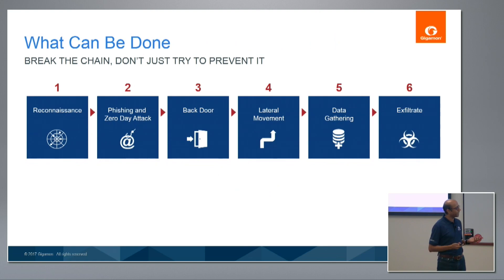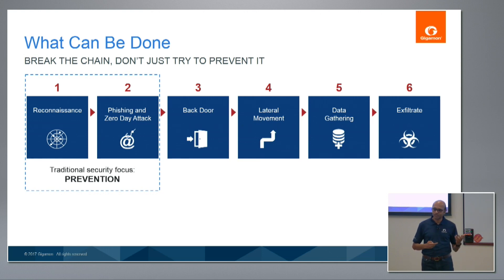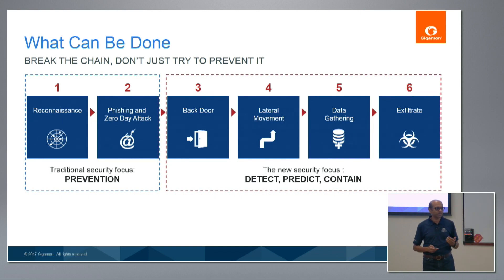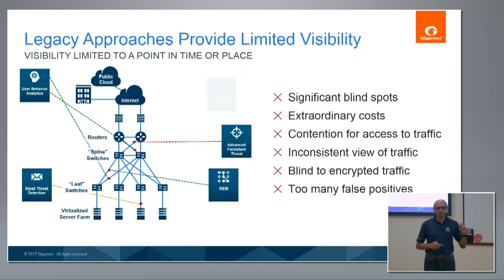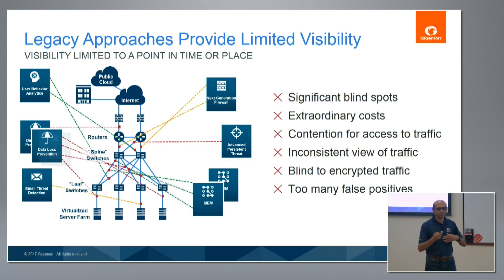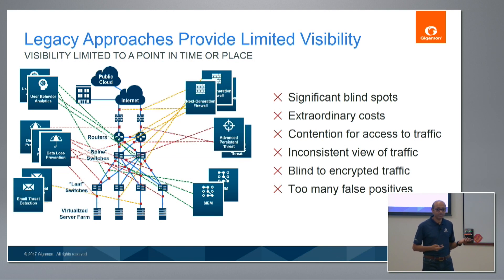So what does that mean from an attacker kill chain perspective? While the historical focus has been a lot on threat prevention, going forward it has to morph and evolve to complement prevention with detection, the emerging space of prediction, as well as containment and response. Legacy approaches to solve this offer very limited visibility because you end up sprinkling tools all over the infrastructure. That means there's a huge amount of cost, you still have significant blind spots, and that doesn't quite cut it.